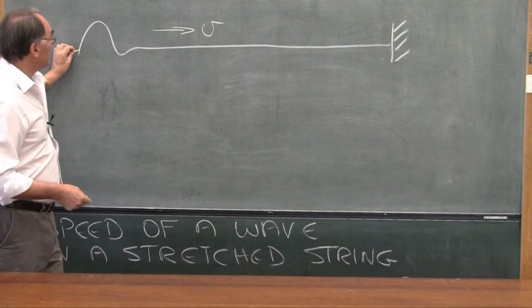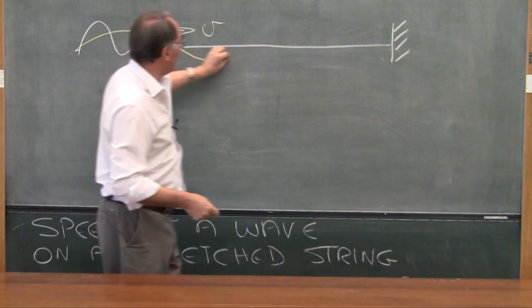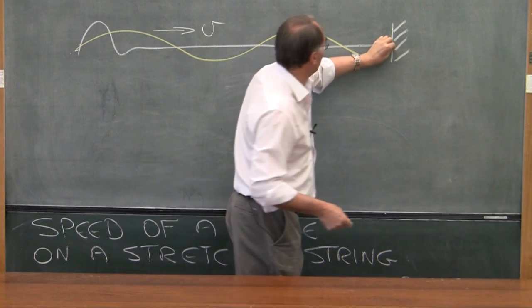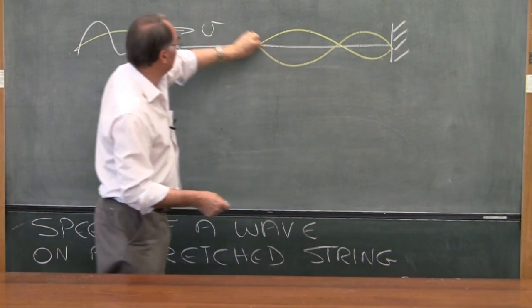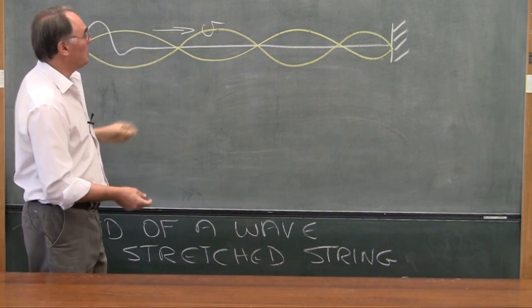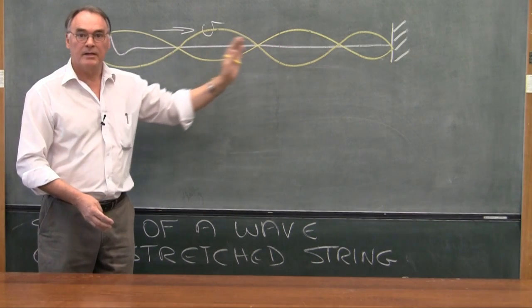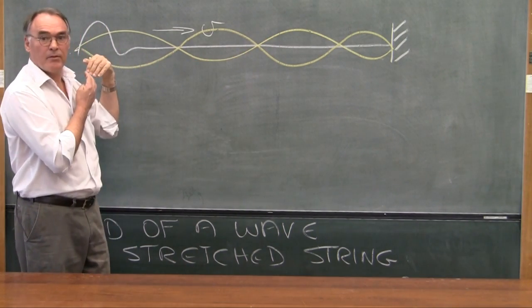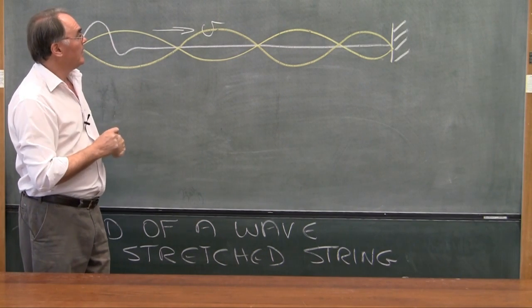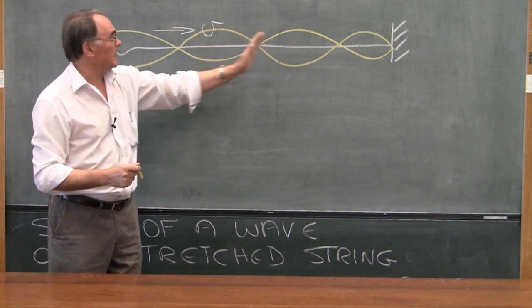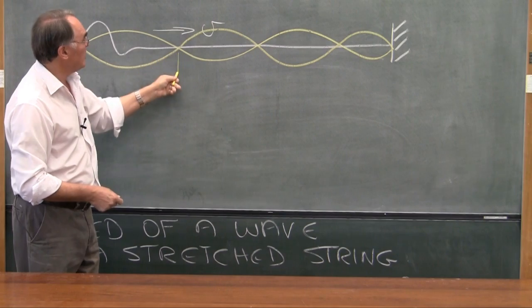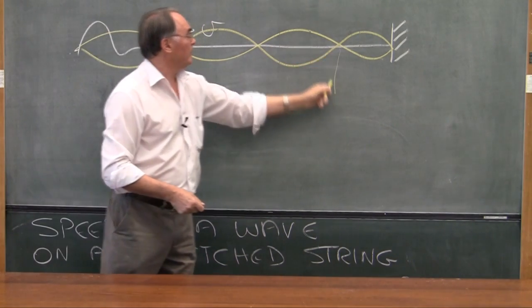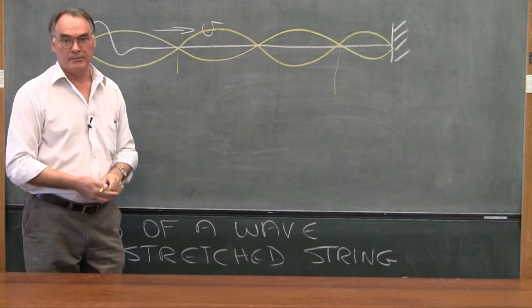the waves going down the string are superimposed upon the waves coming back from the boundary point. Where we get these superimpositions, we get node points. When we look at these node points, we can measure the wavelength lambda.